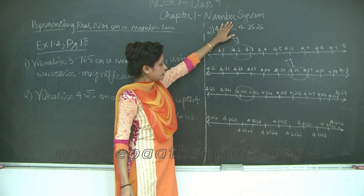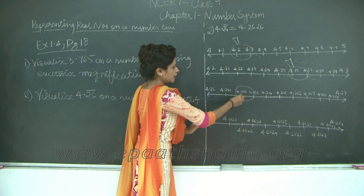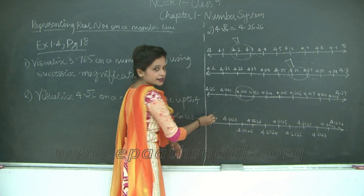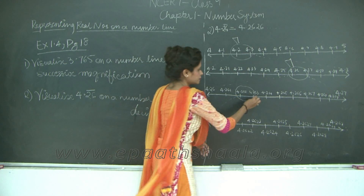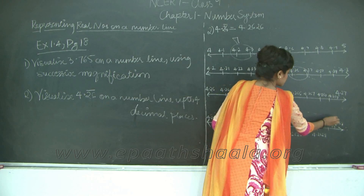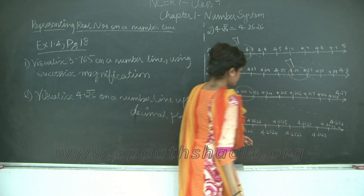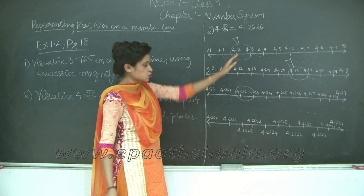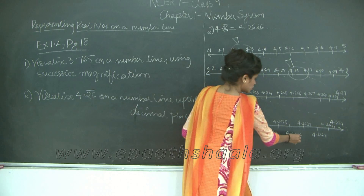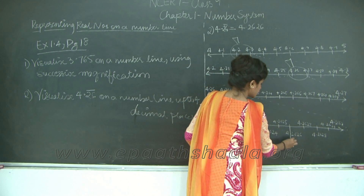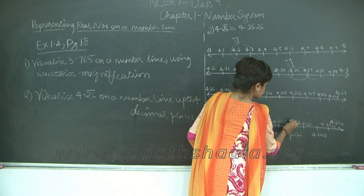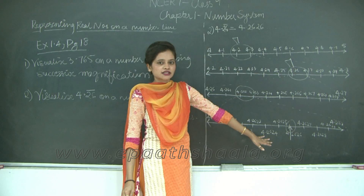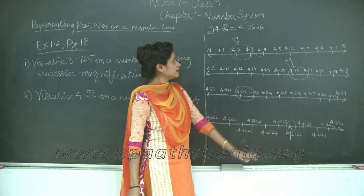So what do we need to plot? First I am magnifying this section, so let us draw dotted lines. We need to plot 4.2626. So I have 4.2626 here. Therefore I have plotted 4.2626 on my number line.